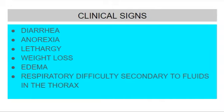Due to increased mucosal permeability, signs include diarrhea, anorexia, lethargy, weight loss, edema, and accumulation of fluids in the thorax.